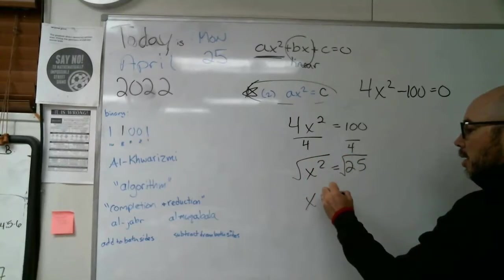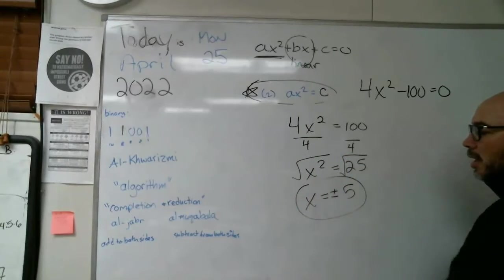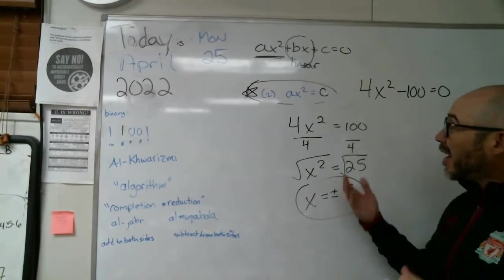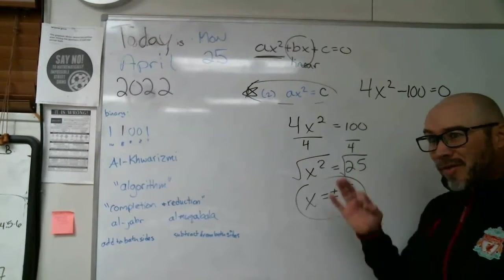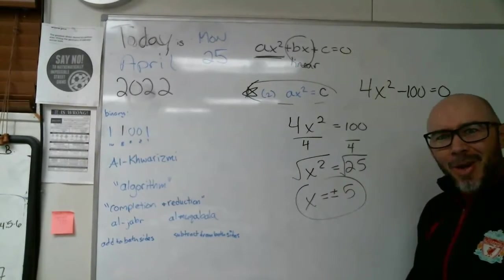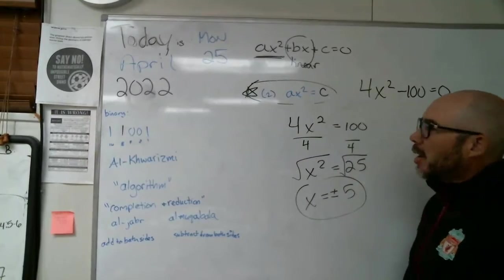So x squared equals 25. Then take the square root of both sides. There's our answers again, plus or minus five. See, this is really like straightforward and simple, right? And it's lesson 102. You kidding me? All right.